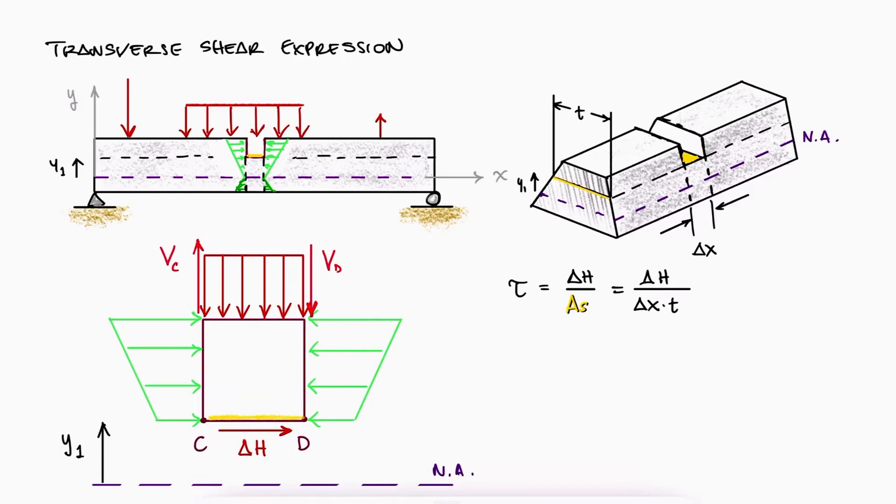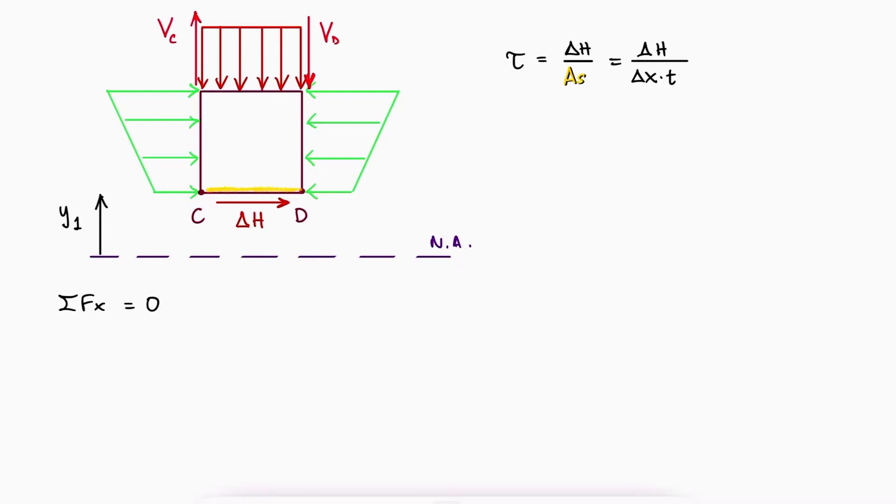A sum of forces in the x-direction, which we know has to be equal to zero, since the element is not moving left or right, would have a positive delta H and the total forces that result from the compressive stresses. The total force affecting the left face would be equal to the value of the stress, which varies and increases along the y-axis, times an infinitesimal area dA, integrated from y1 to the top of the beam.